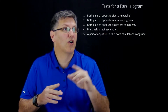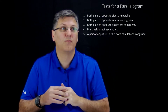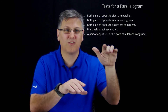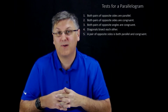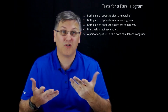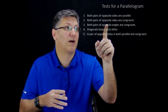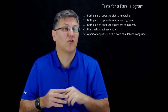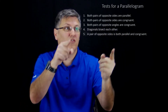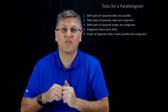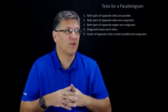The first is that if both pairs of opposite sides are parallel — basically if this side and this side are parallel and these two sides are parallel, it's a parallelogram. That's really just by definition. The second is both pairs of opposite sides are congruent, so if we use a distance formula to find two sides here and two sides here and they're the same length, then it's going to be a parallelogram.